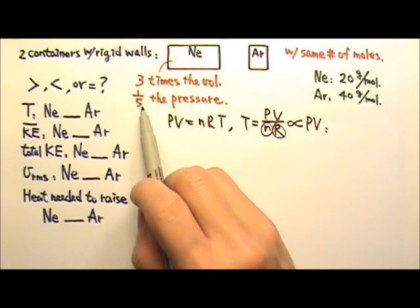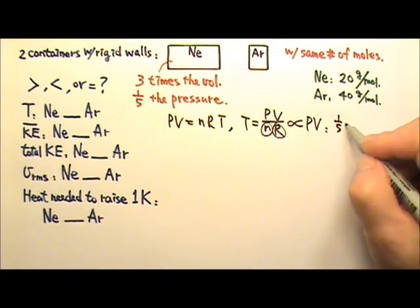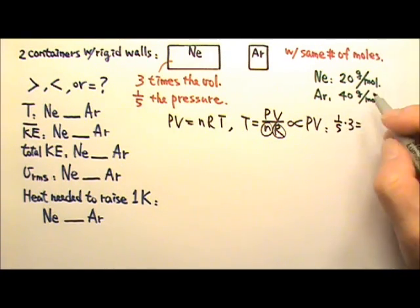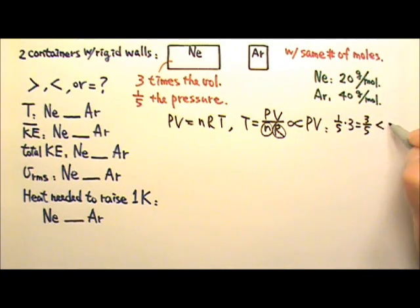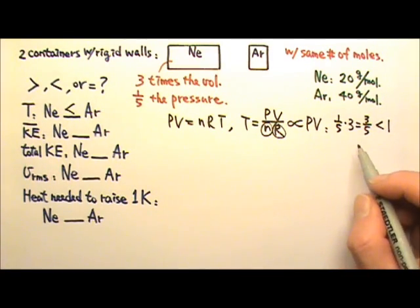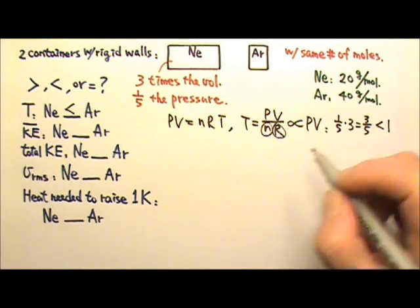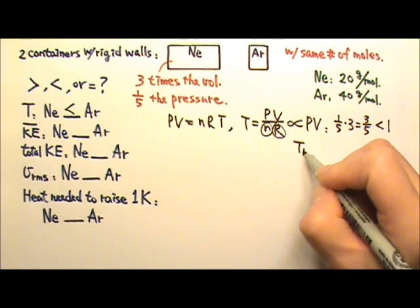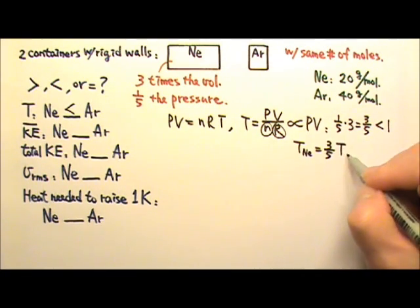For the neon, the pressure is one-fifth that of the argon, and the volume is three times that of the argon, so the product PV for neon is three-fifths that of the argon. Since three-fifths is less than one, the temperature of neon gas is lower than that of argon. In fact, T of neon is three-fifths the temperature of argon.